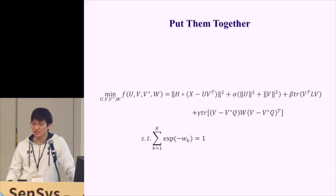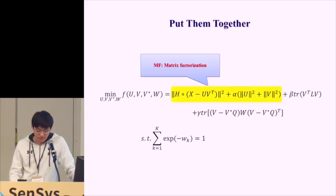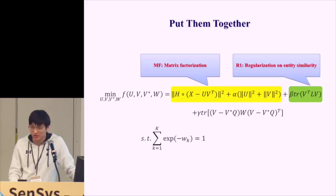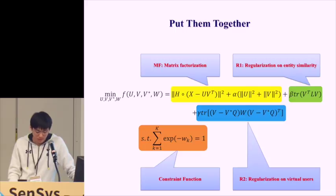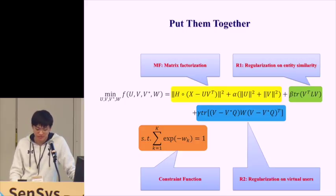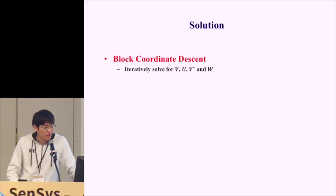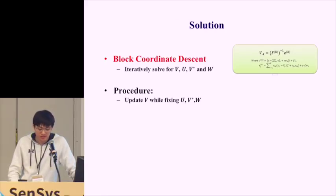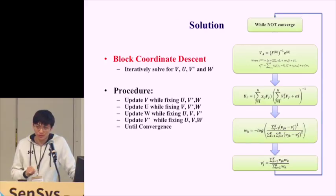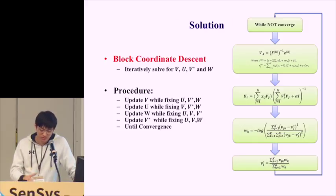Combining all components, we derive the full formulation with: the matrix factorization component, regularization on entity similarity, and regularization on virtual users. We also have a constraint that prevents the reliability degree W from going to negative infinity. To solve this, we use the block coordinate descent method to iteratively update each set of the four variables while fixing the others, until convergence is met. Details can be found in the paper.